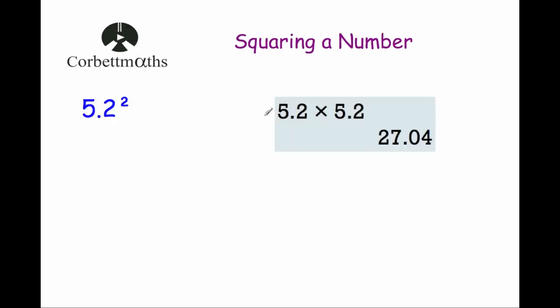5.2 squared means 5.2 times itself. So you could type in your calculator 5.2 times 5.2, and that would give you 27.04.